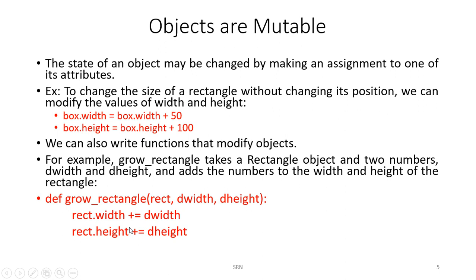Objects are mutable, meaning you can change the values of their attributes. The state of an object may be changed by making an assignment to one of its attributes. For example, to change the size of a rectangle without changing its position: box.width = box.width + 50, and box.height = box.height + 100. We are not changing the corner. So width goes from 100 to 150, and height from 100 to 200.